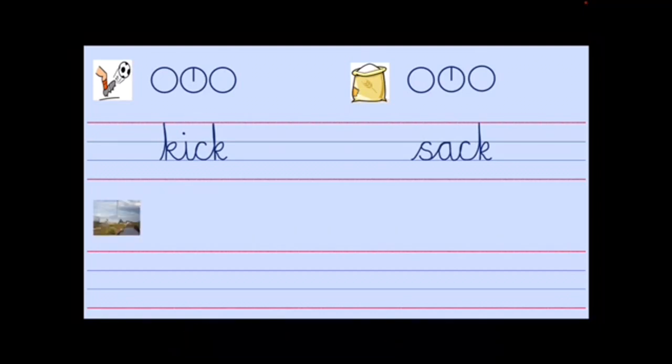Our word is dock. Somewhere for ships and boats to moor or park so that people can get on and off or so they can be mended. This one was called the prince's dock. What sounds can we hear? D, O, K. Which letters will we need? We need the letter D for D, O for O, and the K is at the end. A one syllable word with a short vowel sound, so we know to put CK.